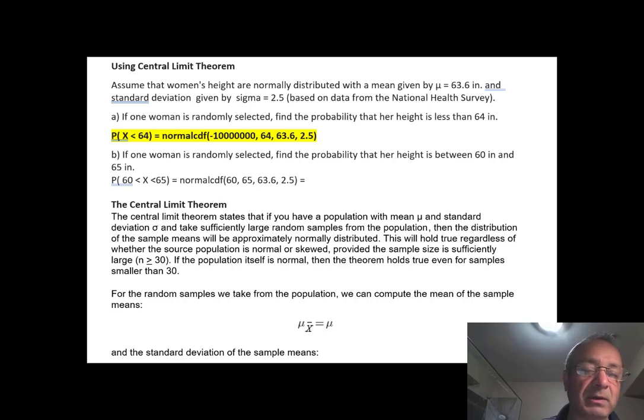In this short example, I'm going to demonstrate the central limit theorem. So here is an example. Assume that women's heights are normally distributed with the mean given by mu equals 63.6 inches and a standard deviation of 2.5 inches.